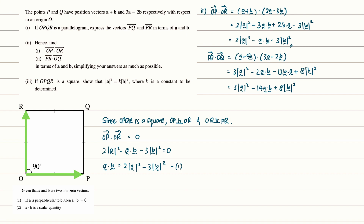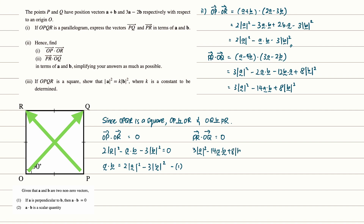For the next perpendicular pair, vector PR dot vector OQ equals 0, since they are perpendicular. The expression 3|A|² minus 14A·B plus 8|B|² equals 0. Making 14A·B the subject, we get 14A·B equals 3|A|² plus 8|B|². Call this equation 2.